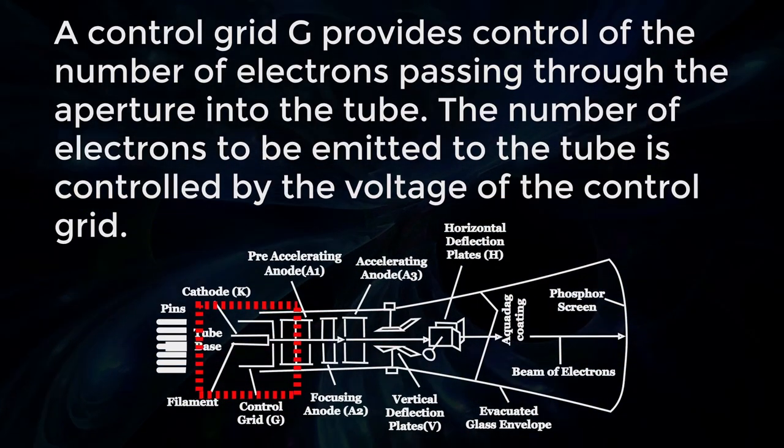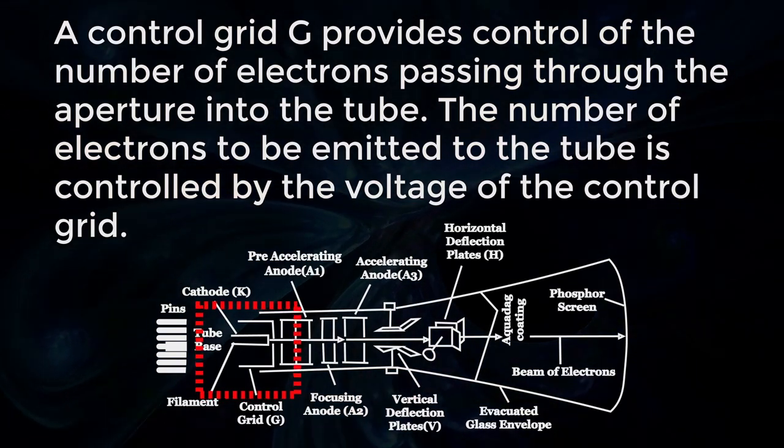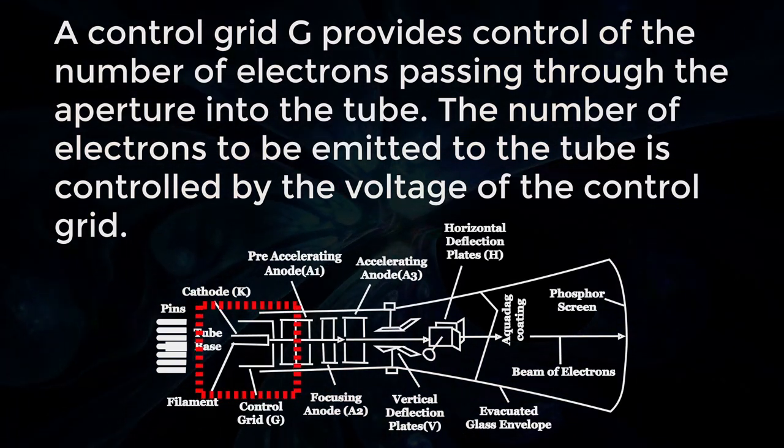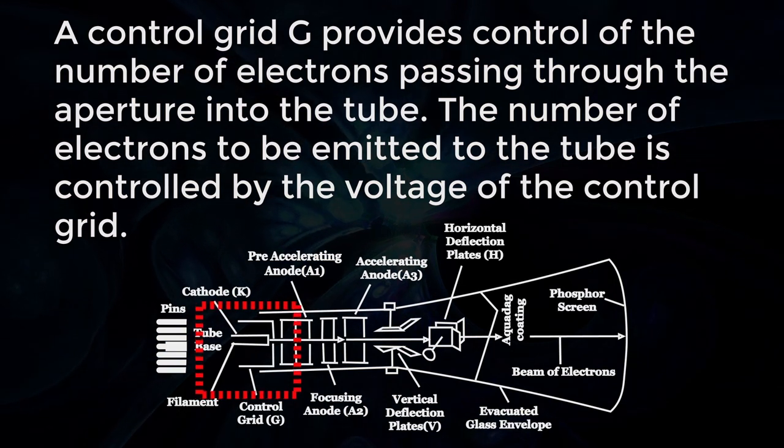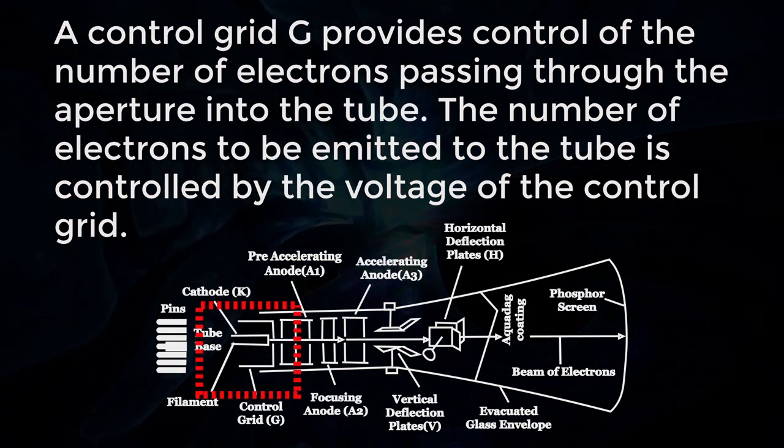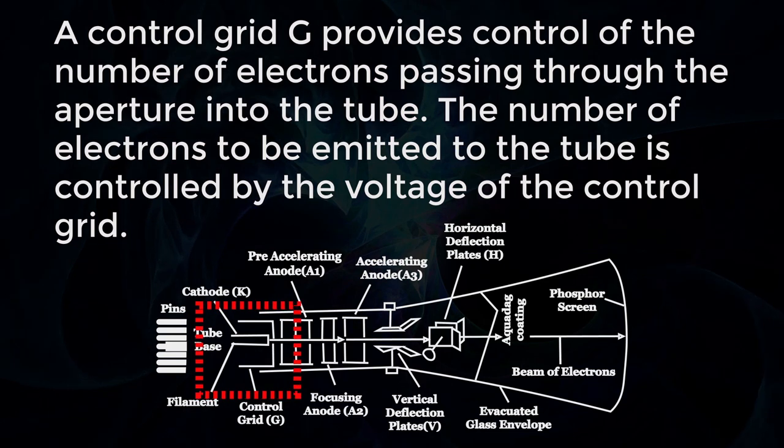A control grid G provides control of the number of electrons passing through the aperture into the tube. The number of electrons to be emitted to the tube is controlled by the voltage of the control grid.